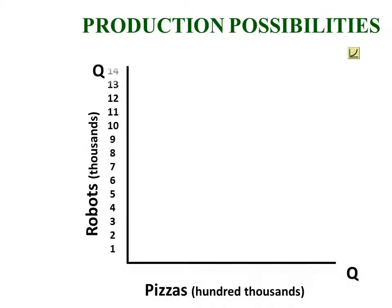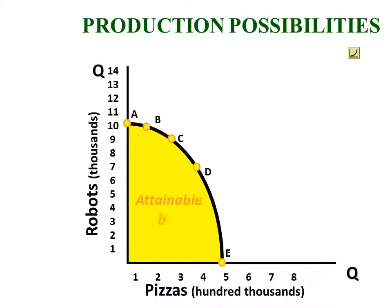This will be our fourth lecture on the Production Possibilities Model. Let's do a quick review of what we learned in the previous lecture. Here we've graphed the five points of our model, A through E.